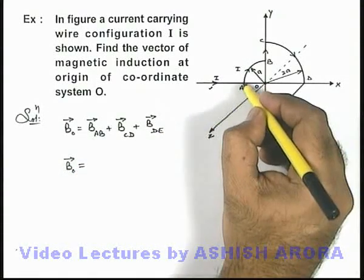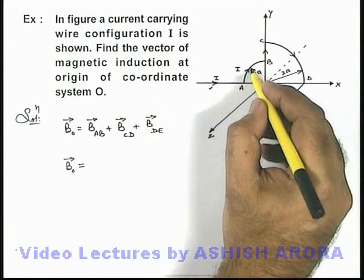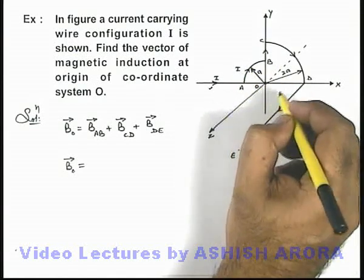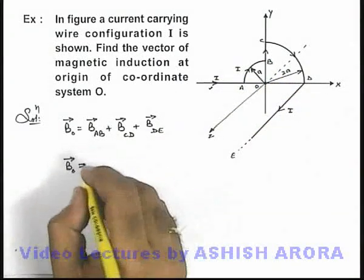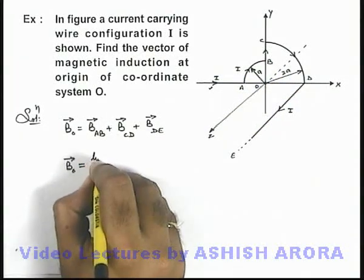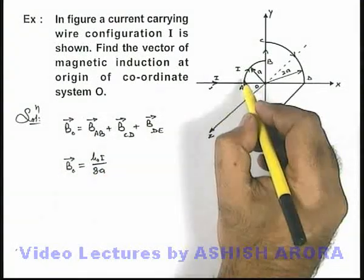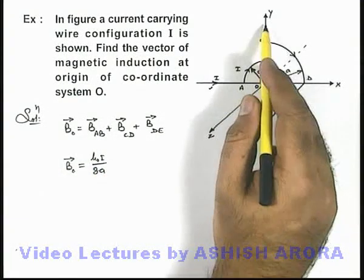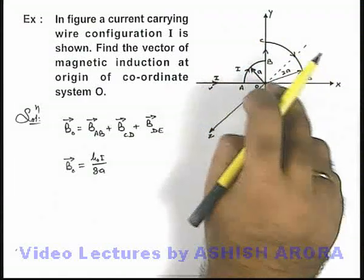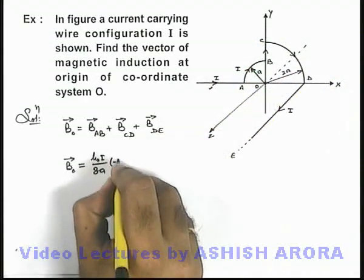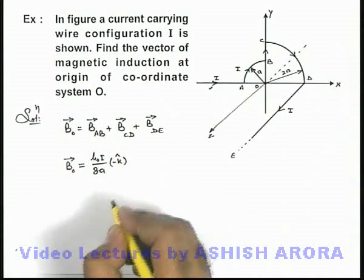Wire section AB is a quarter circle of radius a, which will produce a magnetic induction one-fourth that of a complete circular wire. So its magnetic induction will be μ₀I/8a. And as this section is lying in the xy-plane, it'll produce a magnetic induction along the minus z-axis, so we'll put a unit vector minus k̂ along with this.